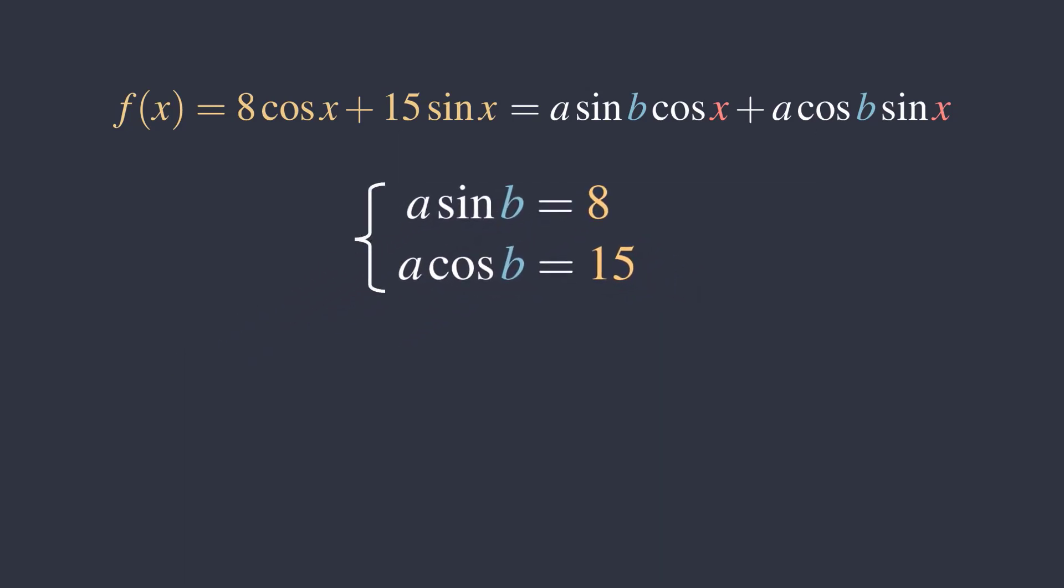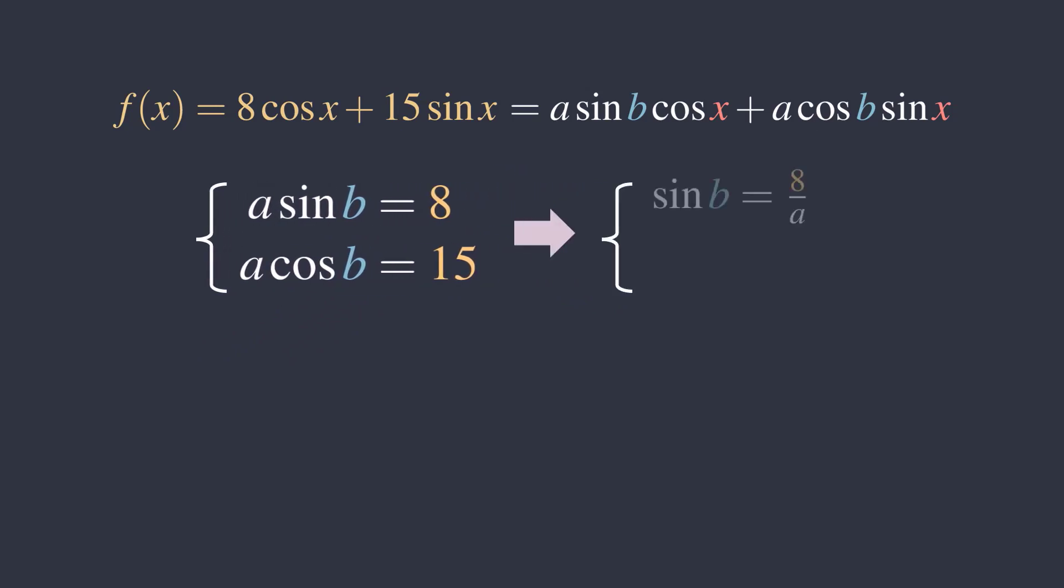We have a system of two equations now. Because we want to find b, we can solve for sine of b and cosine of b. Thus, we have sine of b equals 8 over a, and cosine of b equals 15 over a.